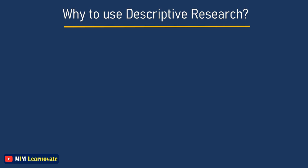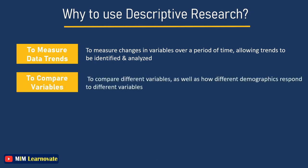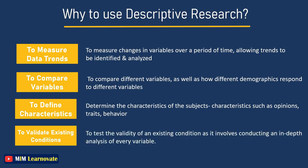Why use descriptive research? To measure data trends — it can measure changes in variables over time, allowing trends to be identified and analyzed. To compare variables — it can compare different variables and how different demographics respond to them. To define the characteristics of subjects — including opinions, traits, and behaviors. To verify or validate existing conditions — it is a useful tool for testing validity through in-depth analysis of every variable before drawing conclusions.